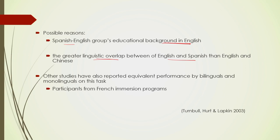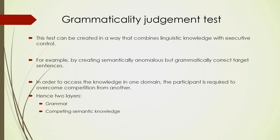A similar study in 2003 looked at the performance of students in French immersion programs and showed equivalent performance by bilinguals and monolinguals on this task. The key finding is that if language skill in vocabulary and grammar are comparable, then both monolinguals and bilinguals will do equally well, and sometimes bilinguals tend to do better on the wug test.